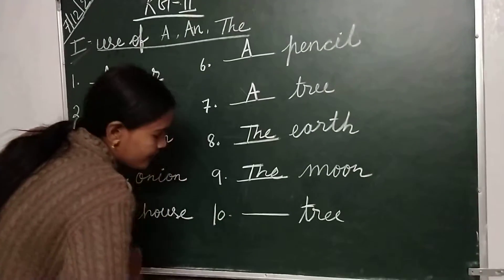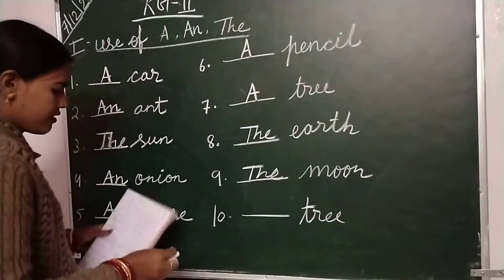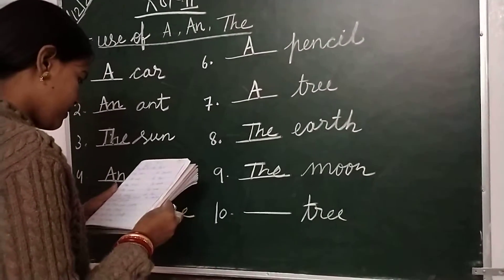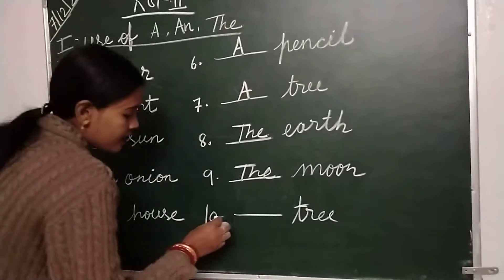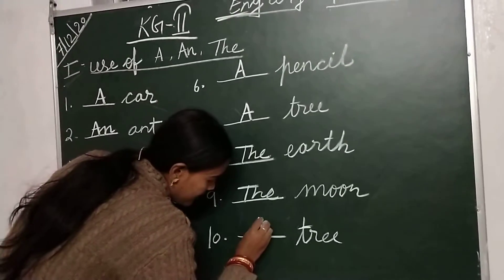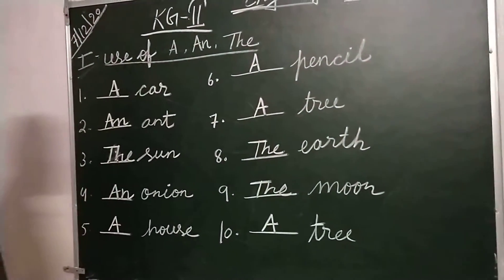Last number is tree. So children, write down: a tree.